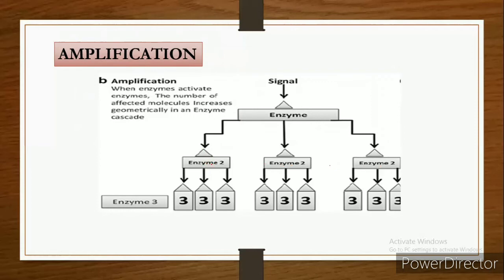From this second enzyme, each of which activates many molecules of the third enzyme, and so on. In amplification, when an enzyme activates another enzyme, the number of affected molecules increases geometrically in an enzyme cascade.